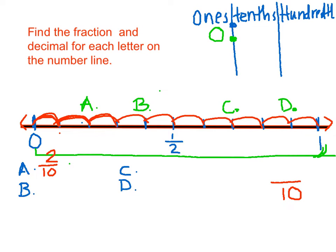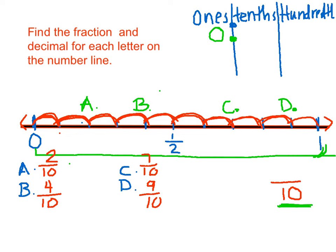B would be 4 tenths. And then C is 7 tenths, and D is 9 tenths. The great thing about this is we are working with tenths, and what you notice about decimals is they also come in tenths, hundredths, and so on. So we're going to have an easy time converting these to decimals. We've done the fractions, and now we're on to decimals.